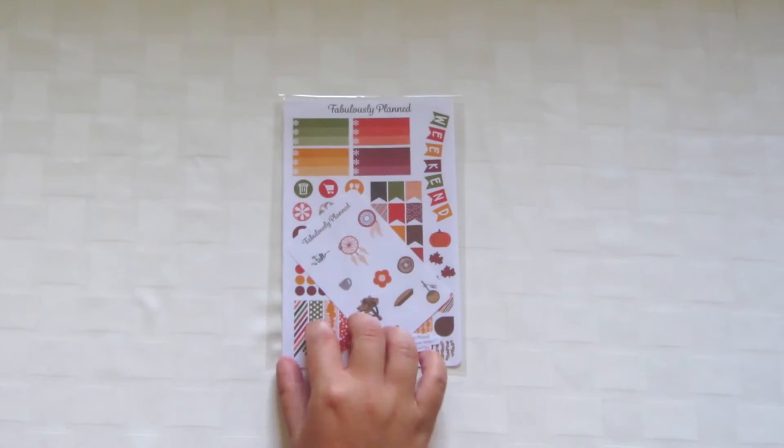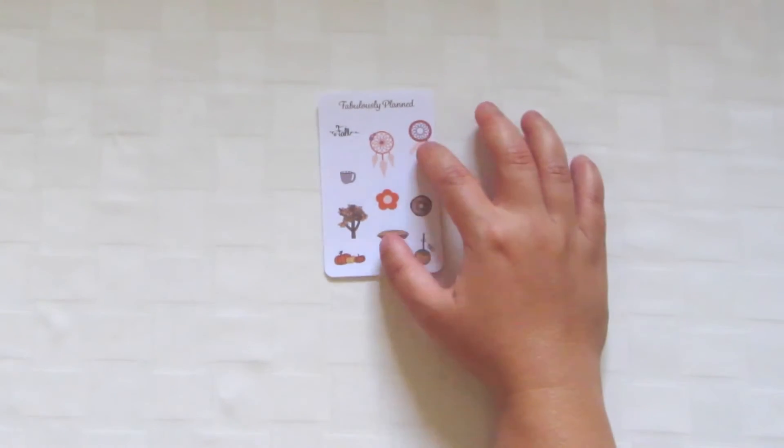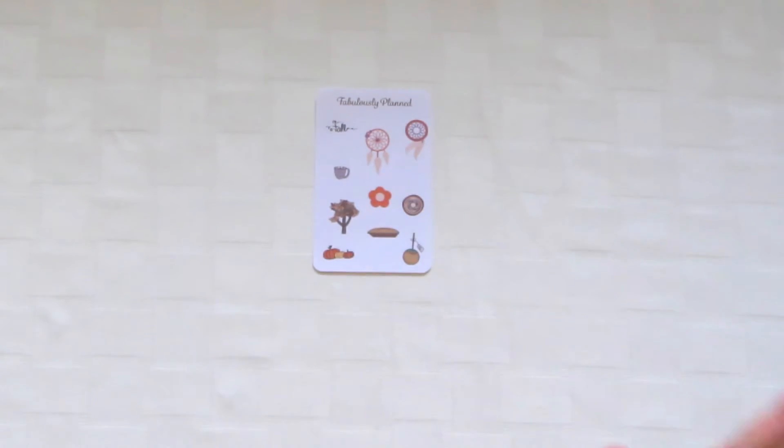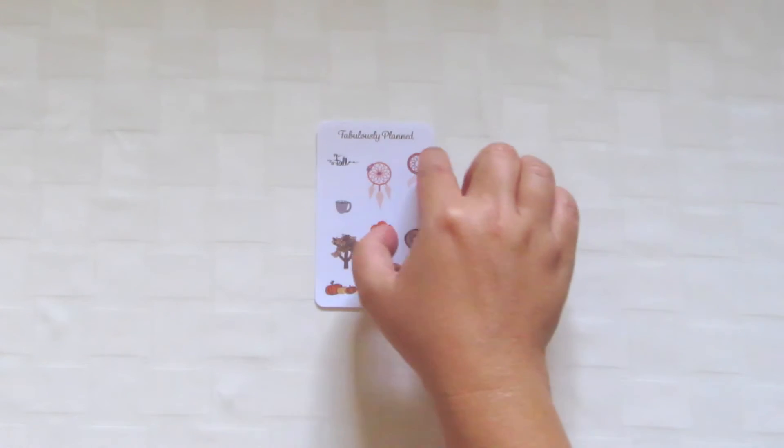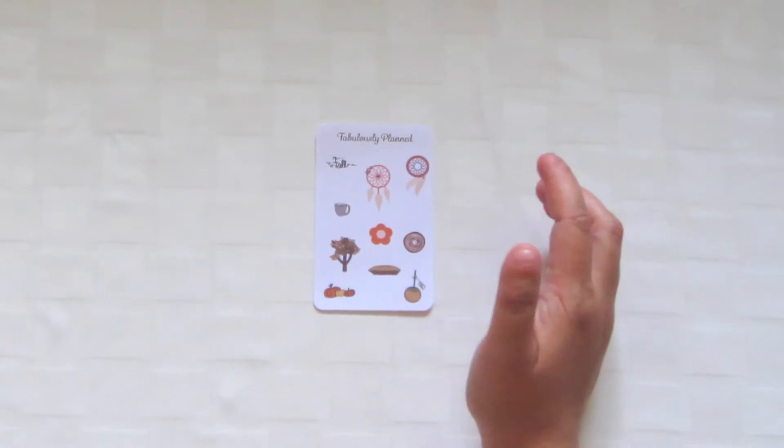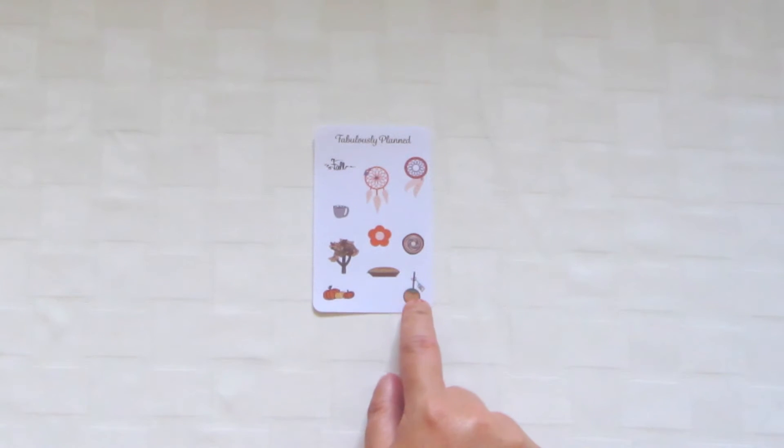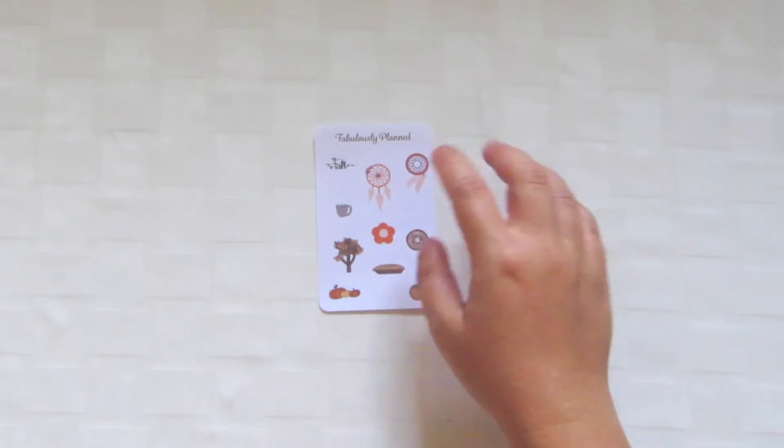Let's get into seeing what I got. All of her stickers are matte, which I like. I love that in her sampler she has her name cut out here so that it can be used in your planner. Her sampler is very fall themed with pumpkins, candied apples, and fall trees.